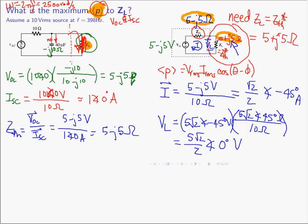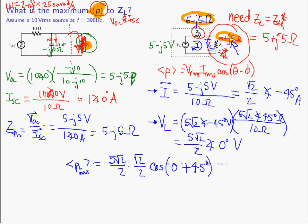Now we have the current through and the voltage across the maximum power load. The maximum power is V RMS times I RMS times cosine of theta minus phi, which is 5 root 2 over 2 times root 2 over 2 times cosine of zero minus minus 45. Working through the arithmetic, the maximum power delivered to the load is 5 root 2 over 4 watts.